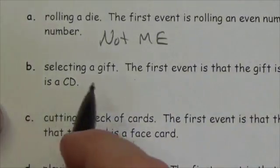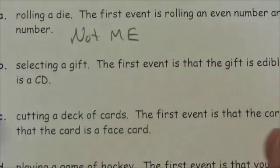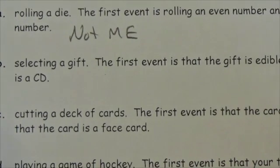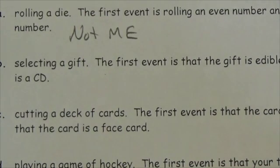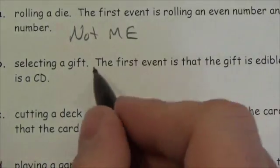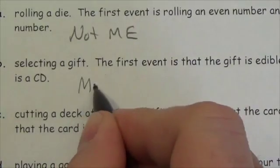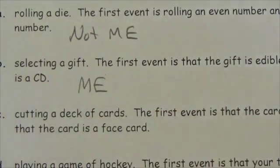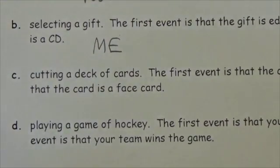Take a look at this one: selecting a gift. The first event is that the gift is edible, and the second event is that the gift is a CD. I'm trying to imagine a situation where you could get a CD — assuming a working CD — and yet it'd still be edible. I'm not seeing that happen, so I'm going to assume that those are mutually exclusive; there's no overlap between those two sets.